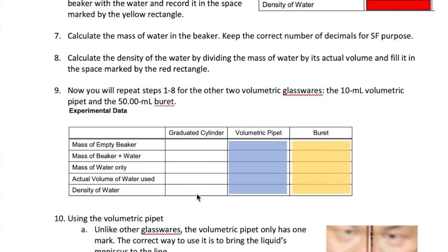Hi everyone, welcome back to this second video in the density series. In the first video we discussed how to use a graduated cylinder to measure volume and then calculate density. You're now going to repeat the experiment for the other two columns.